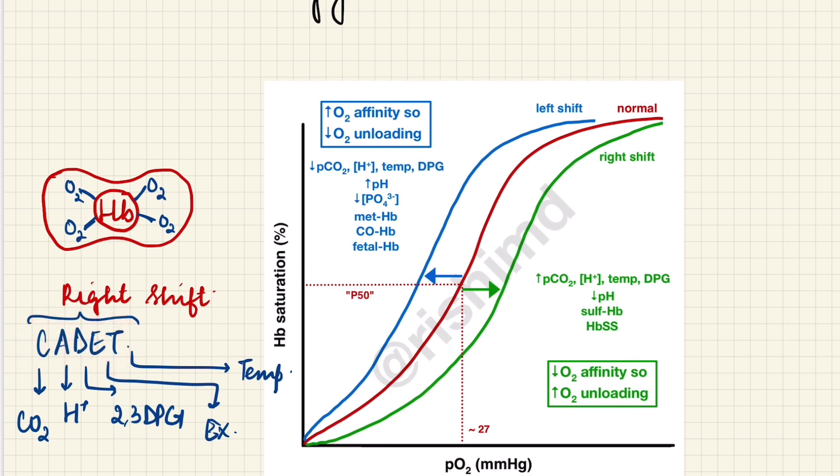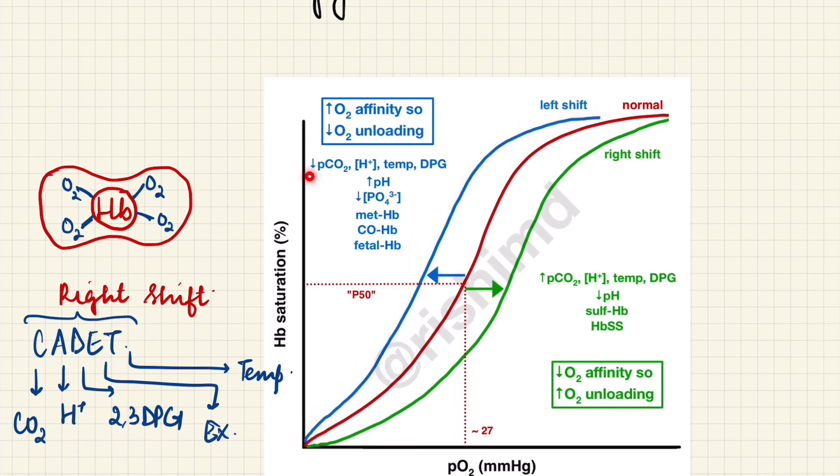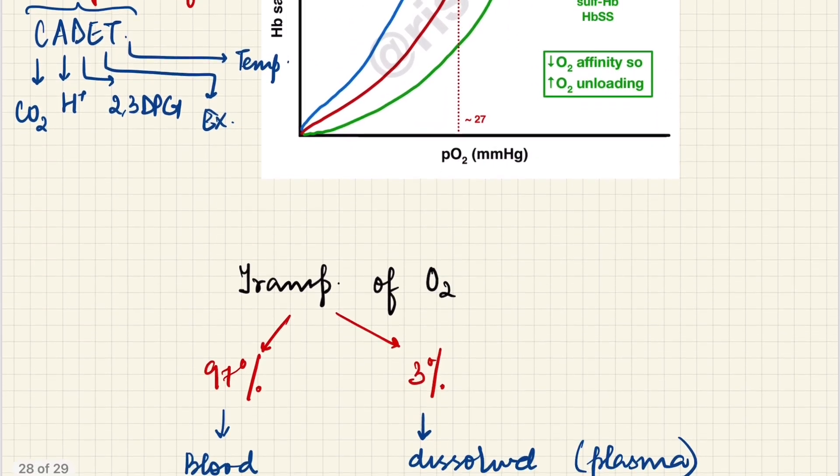Now the opposite happens. Here CO2 very low, acid very low, temperature low, DPG low, so the pH is high. All of this increases the oxygen association with the hemoglobin and in turn shifts the curve towards the left side. This is oxygen dissociation curve.